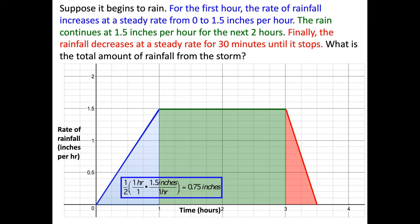So let's look at this. The blue triangle, so remember the area of a triangle, one half base times height. So you have one half times the base, which is 1 hour, times the height, which is 1.5 inches per hour. Notice again, hours simplify and you're left with inches. So in that first hour, about three quarters or 0.75 inches come down from the storm.